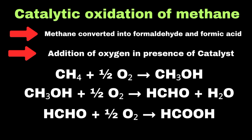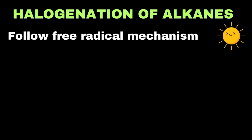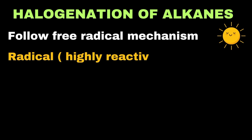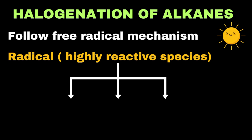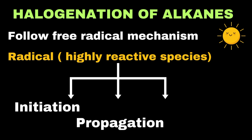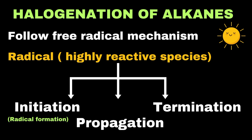A very important reaction of alkanes is the halogenation of alkanes. This reaction takes place in the presence of sunlight and follows a free radical mechanism. A free radical refers to a highly reactive species with an unpaired electron. The free radical mechanism takes place in three steps: initiation, propagation, and termination. During initiation, the formation of radicals takes place.